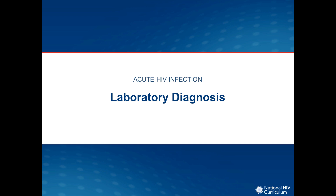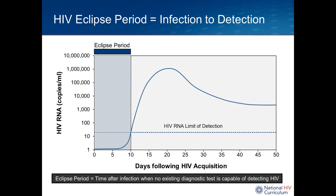In terms of laboratory diagnosis of HIV, this can be a little confusing and tricky. As shown earlier, there is a period where the virus is essentially not detectable. If we have no markers to test for the virus, there is a period called the eclipse phase — the time after infection when no existing diagnostic test is capable of detecting HIV. I tend to think of the eclipse phase as the infection-to-detection phase.